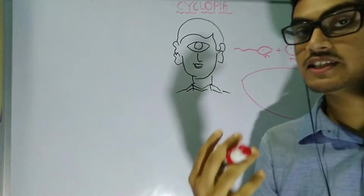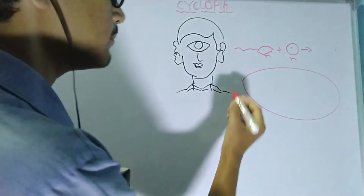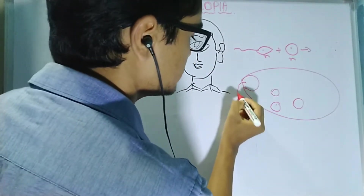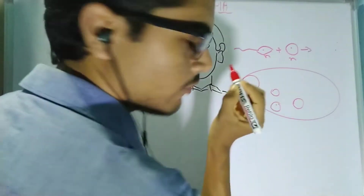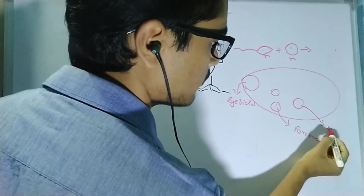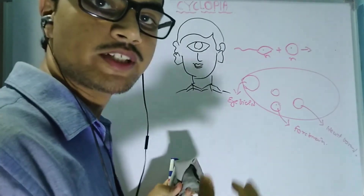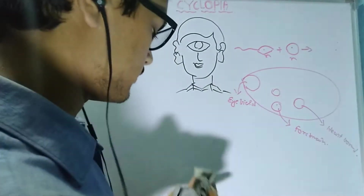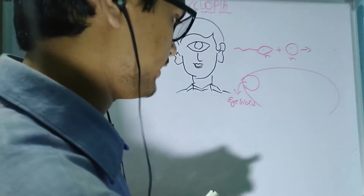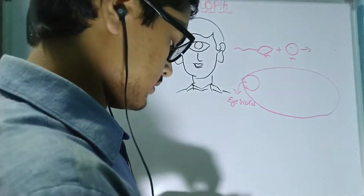Various portions of this embryo are responsible for the formation of different organs present in our cranial, thoracic, abdomen, and pelvic regions. The embryo consists of multiple sites — one site is responsible for eye field formation, another for ear formation, another for heart formation, and so on. Here we will focus only on the site responsible for eye field formation, because cyclopia is related to your eye.